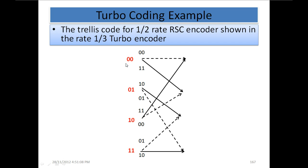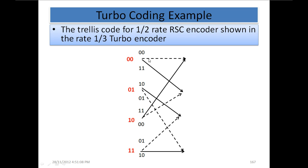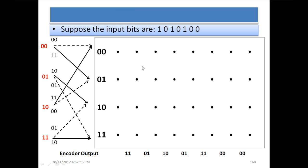This is the trellis diagram for just this one encoder — it is actually a 1/2 encoder. We will not go through how we achieved it, but when the state of these registers is 0,0 and the input is 0, we get output 0,0; if the input is 1, the output is 1,1. Now suppose the input bits are 1, 0, 1, 0, 1, 0, 1, 0, 0.